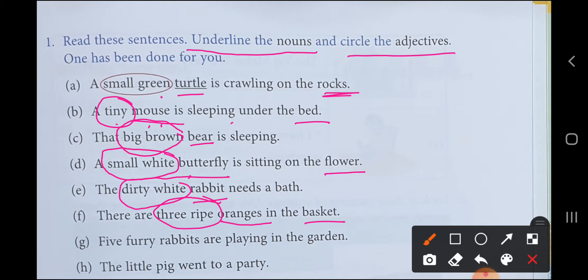Next one is five furry rabbits are playing in the garden. Rabbits, noun. Garden, noun. Now how are the rabbits? Five is quantity, how many? Five furry. Next one is the little pig went to a party. Where did it go? Party. Noun. Who went? Pig, noun. And how is the pig? Little. So this is adjective.